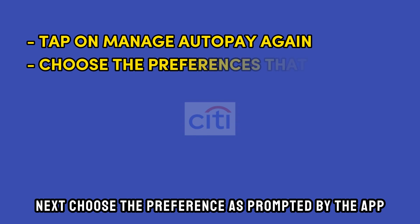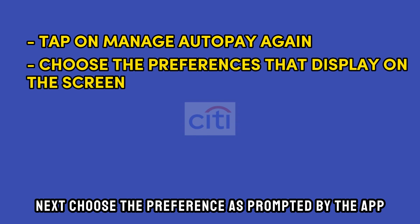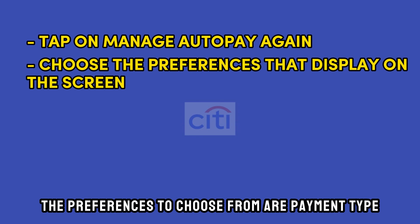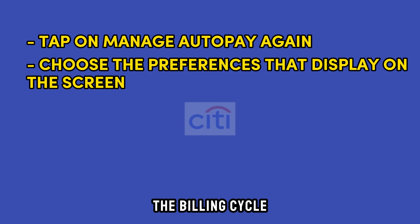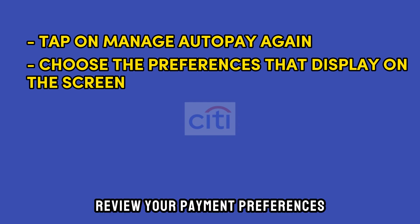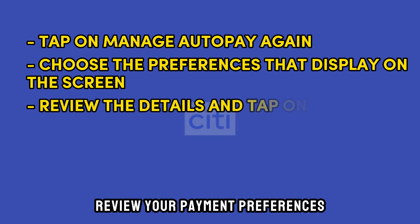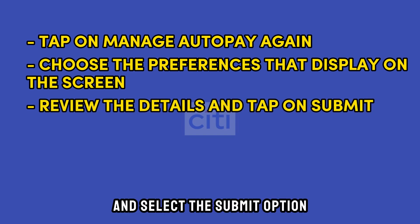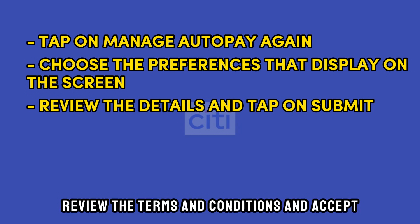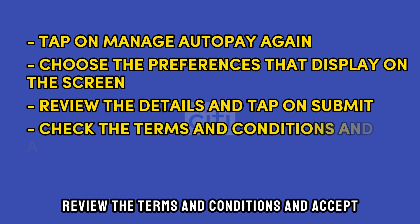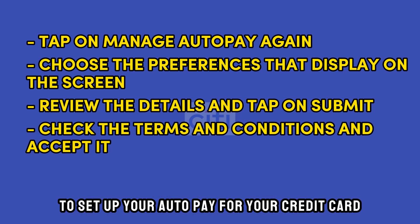Choose the preference as prompted by the app. The preferences to choose from are payment type, the billing cycle, and the payment dates. Review your payment preferences and select the Submit option if satisfied. Review the terms and conditions and accept to set up your Auto-Pay for your credit card.